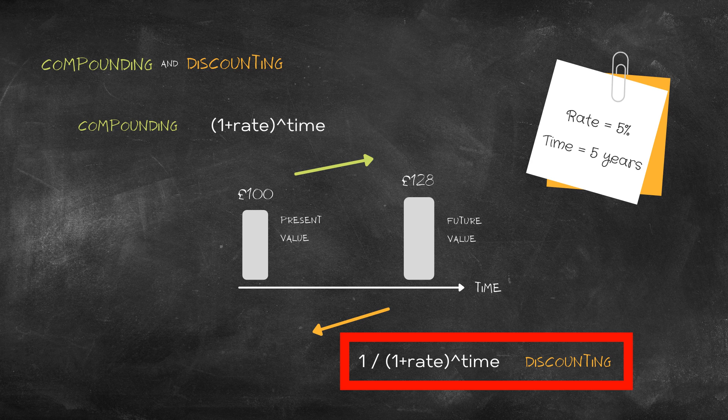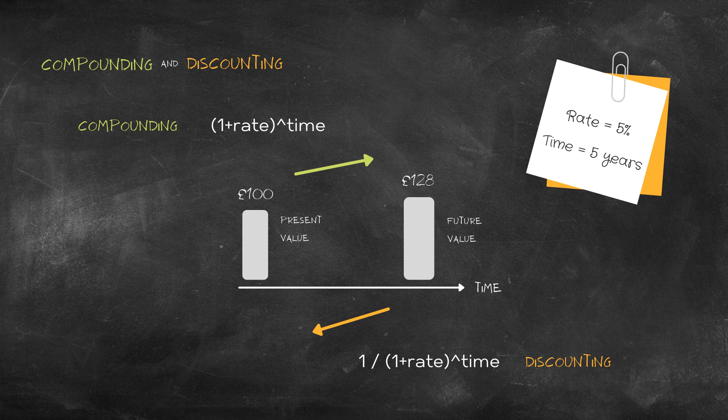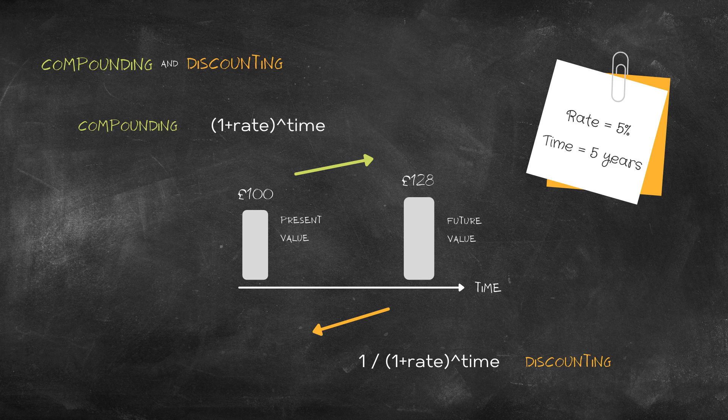To get from future value back to present value is called discounting, and you can use the formula 1 / (1 + rate)^time. Multiply 128 pounds by this formula to get back to the hundred pounds. When compounding or discounting, the bigger the rate or the longer the time, the bigger the effect.